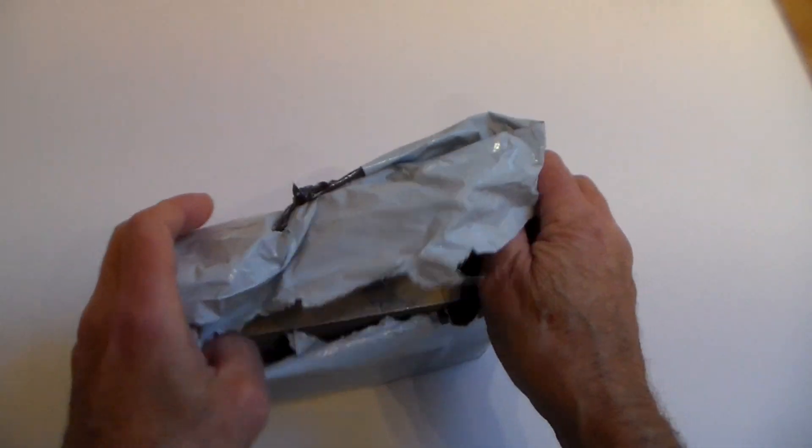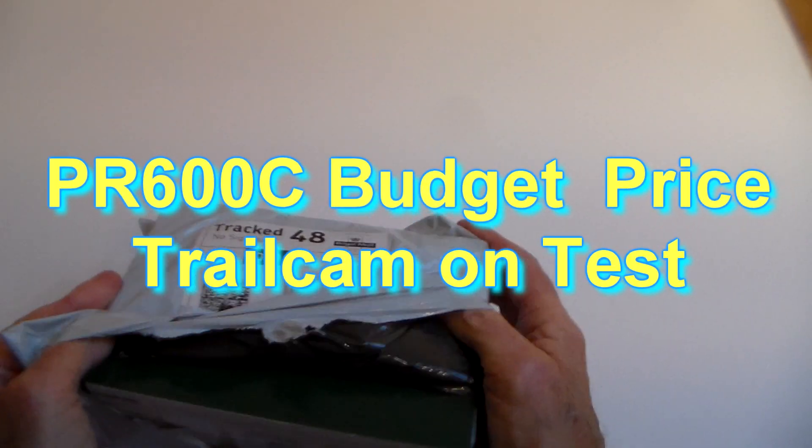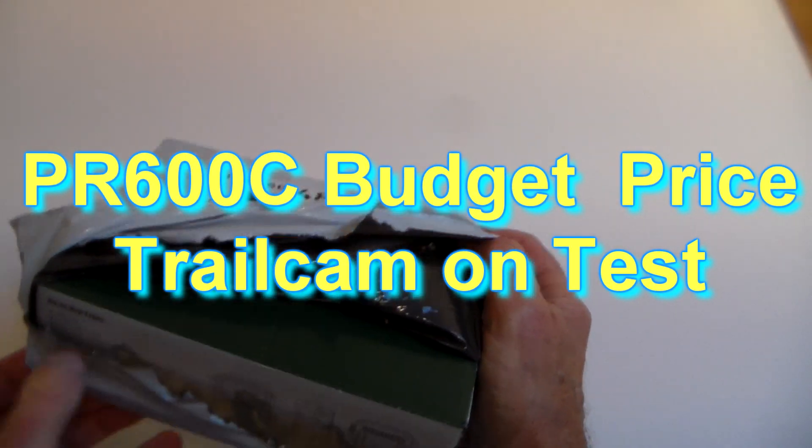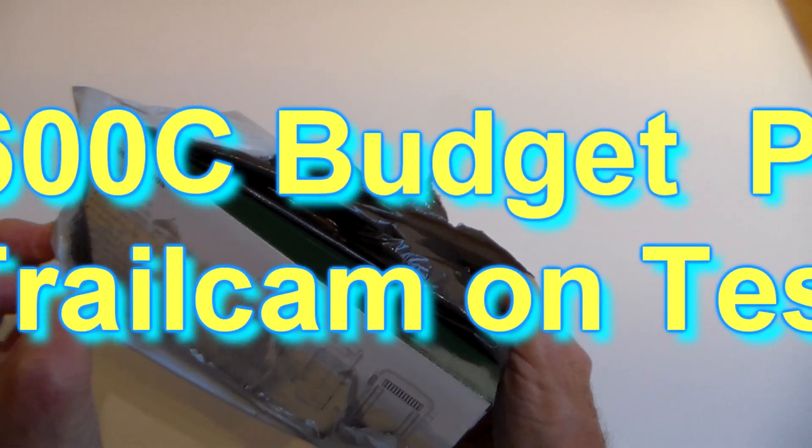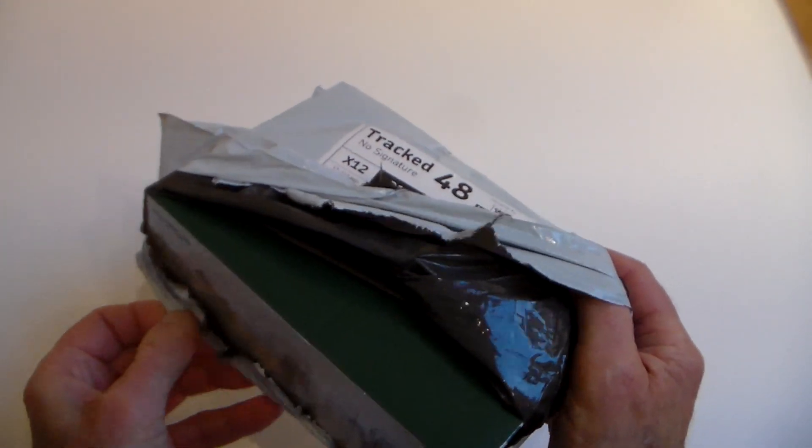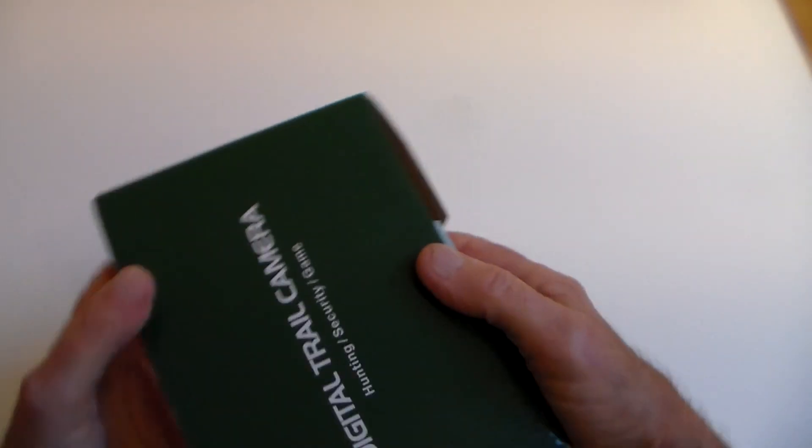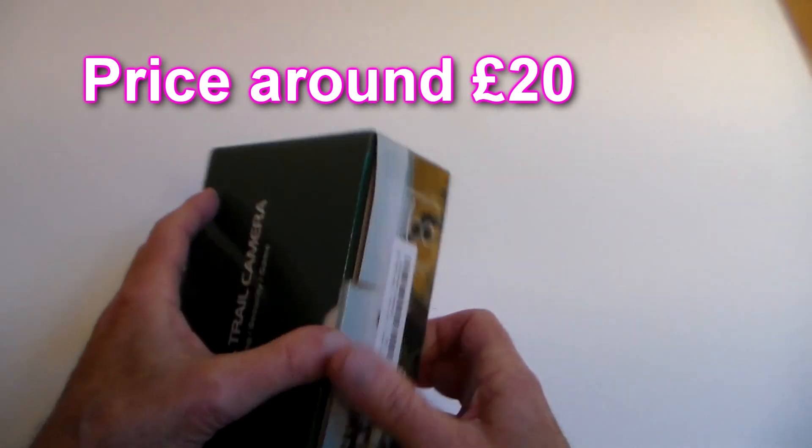Hi there guys and gals, something a bit different because this is a trail cam. I get a bit of wildlife around where I live and I've tried various motion sensing devices, but this PRC 1200 from Banggood was just around the 20 quid mark.